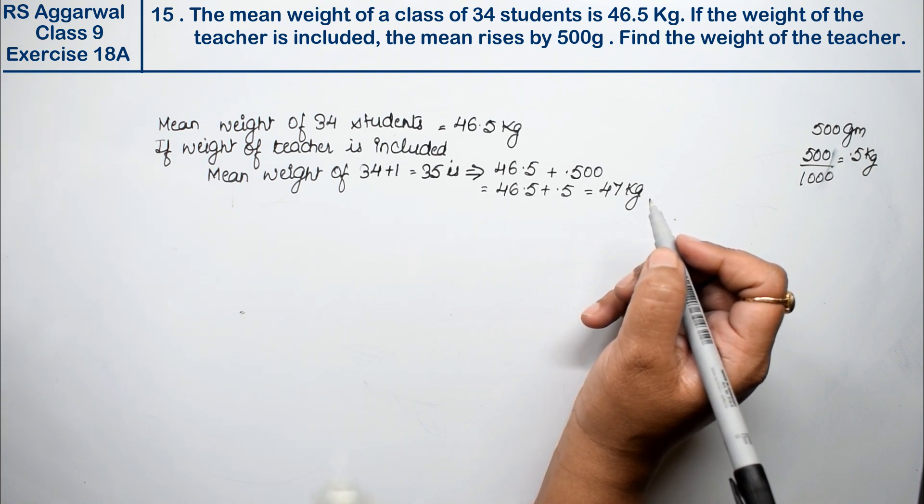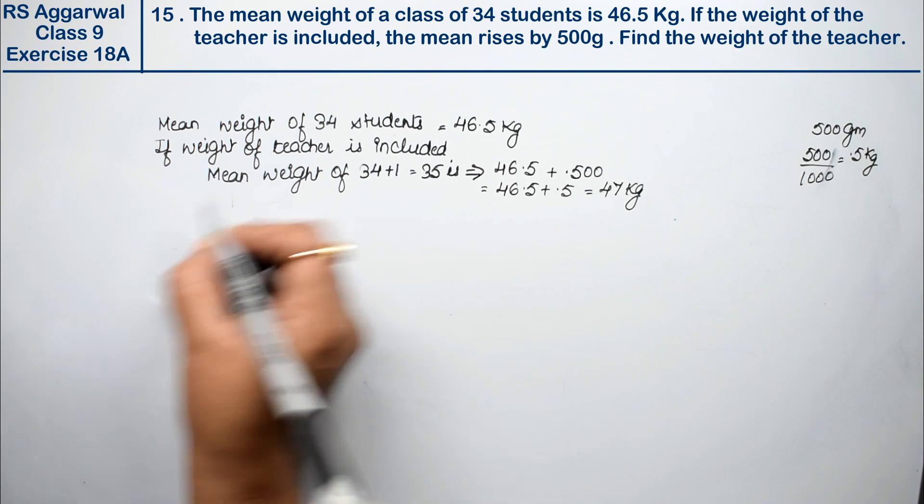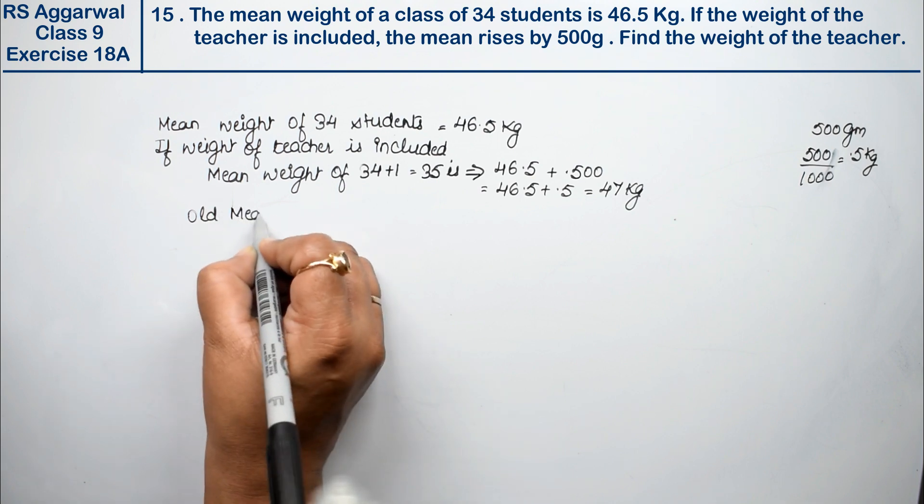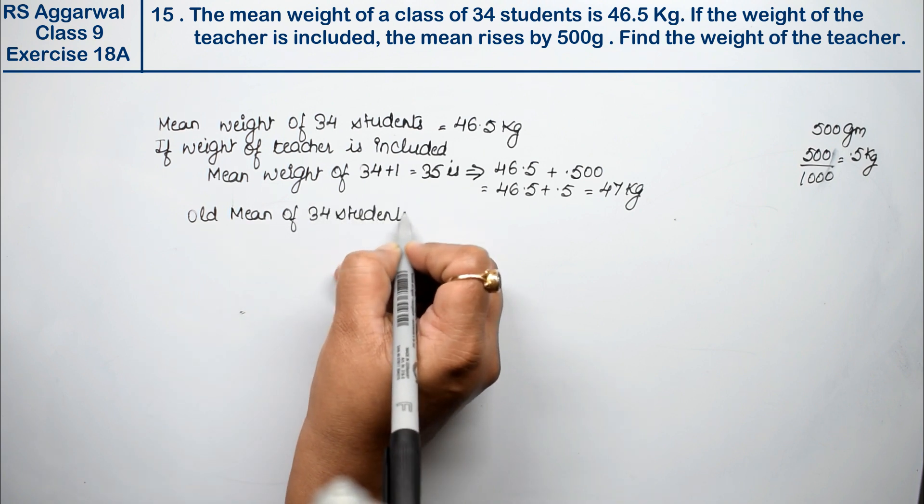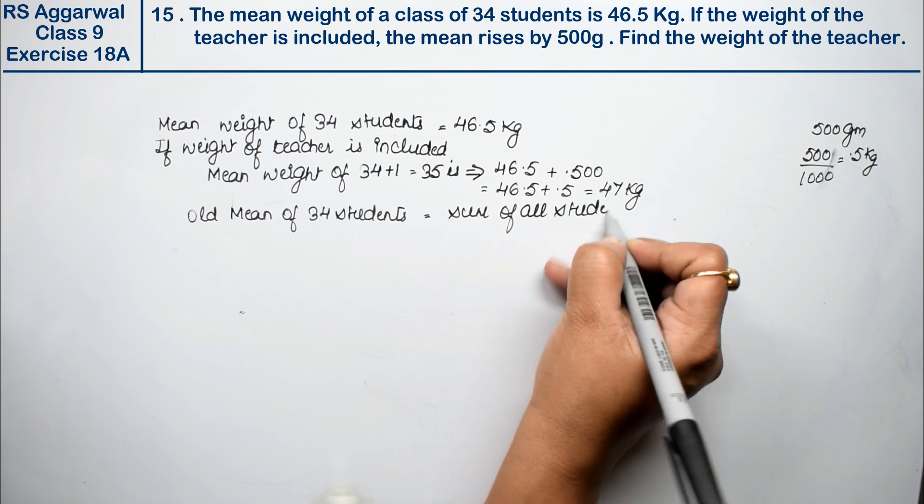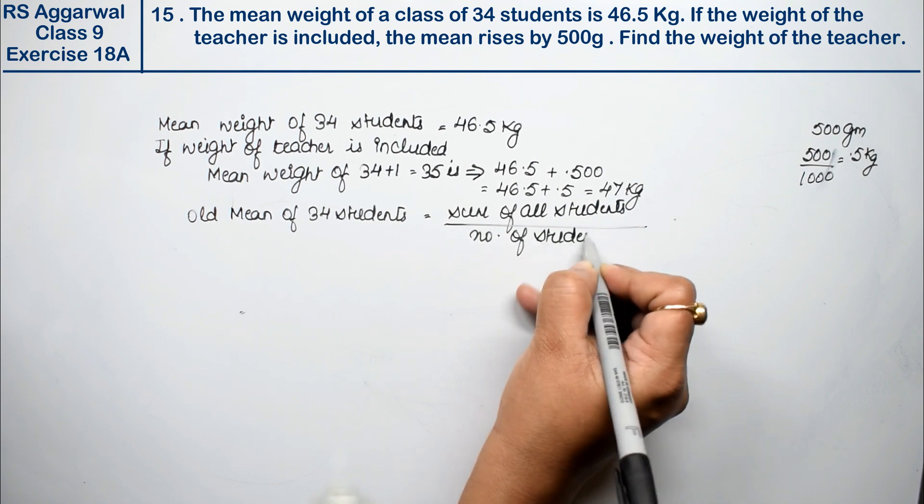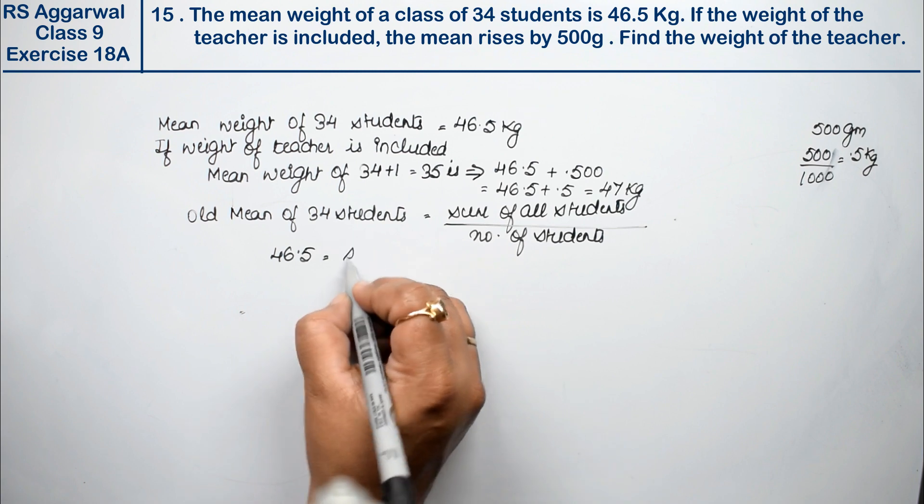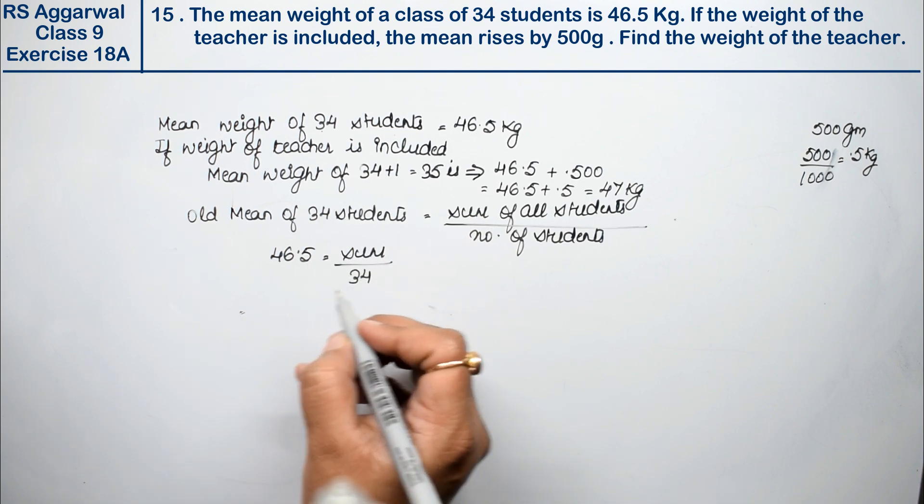So how will the teacher's weight come out? Friends, we will take the first mean weight when 34 students were. So mean weight, we have old mean weight, old mean of 34 students. So what will it be? Sum of all students divided by number of students. Right? So mean weight, how much is it? 46.5. And sum of all students, sum of all students divided by number of students.